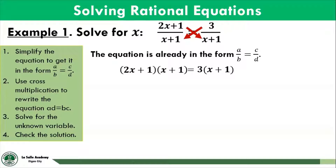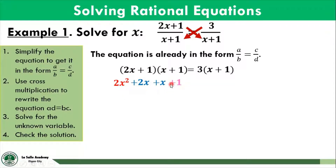Let's solve the left-hand side using the FOIL method — First, Outer, Inner, and Last. First terms: 2x times x gives 2x squared. Outer terms: 2x times 1 gives positive 2x. Inner terms: 1 times x gives x. Last terms: 1 times 1 gives positive 1. On the right-hand side, applying the distributive property: 3 times x is 3x, and 3 times 1 is positive 3.